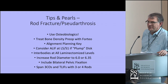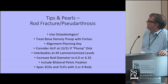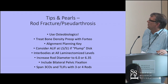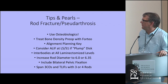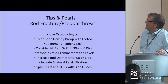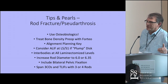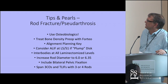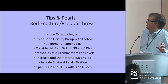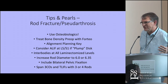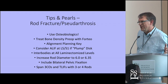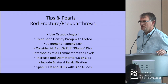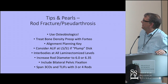To reduce the incidence of rod fracture, osteobiologics and specifically bone morphogenic protein should be used in most adult spinal deformity cases. Despite ongoing controversy, there is fairly good data supporting this. WashU single-center data shows a reduction in nonunion and revision for that diagnosis when BMP is used. The ISSG multicenter data found the same: among surgeons where roughly half used BMP and half did not, those using BMP had a lower incidence of rod fracture independent of other factors.